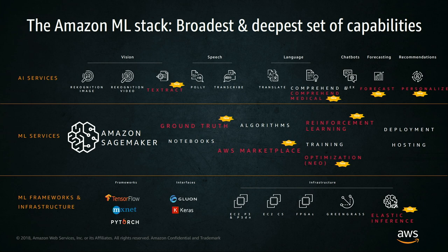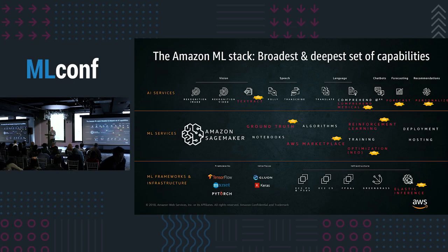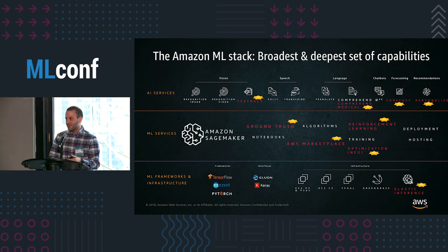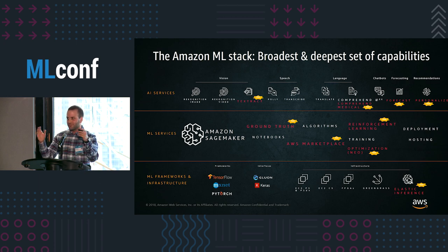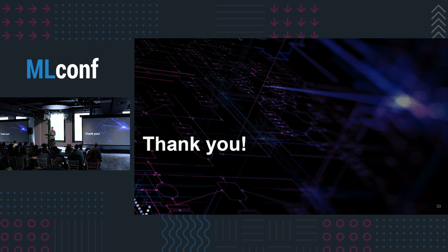In conclusion, this was a deep dive into the algorithms piece of SageMaker. If you use the built-in algorithms or the AWS Marketplace for machine learning, you really don't have to write any of that code — you just bring your hyperparameters and your dataset and run training and do your inference. But if you're interested in building your own algorithm, hopefully this piqued your interest and gave you enough information to get started. This is the whole universe of AWS machine learning services — not just the algorithms, but a wide variety of tools and capabilities. Thank you for your time, and I'll be available at the Amazon booth for questions throughout the day.